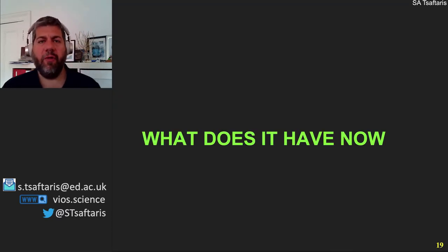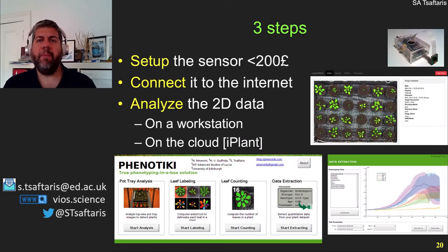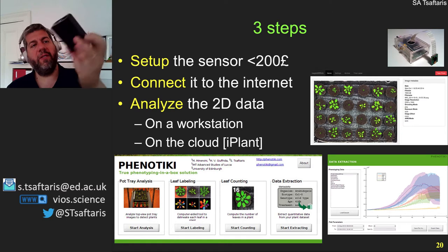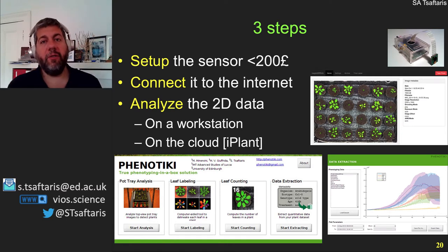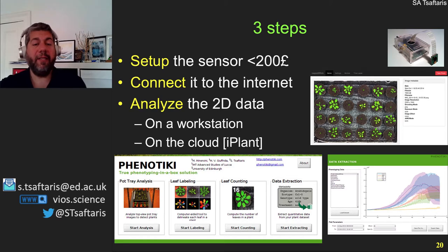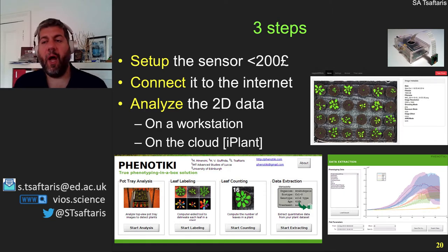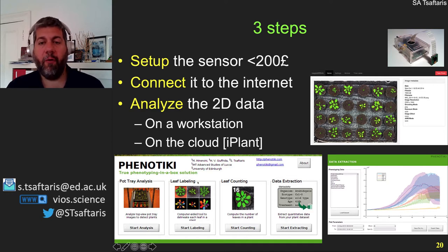So how does Phenotyky work? The setup is simple — you take the sensor, which is very easy to build and based on Raspberry Pi. You connect it to the internet, there is a graphical interface to set it up, and a graphical interface to analyze the data once you download it to your desktop. You can also do it on the cloud, based on the iPlant infrastructure, now CyVerse, in a batch mode. We have ready-made tools for analyzing pot trays, labeling leaves, leaf counting, and data extraction.